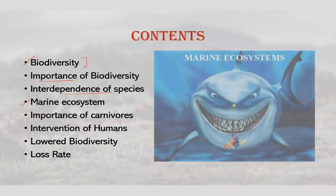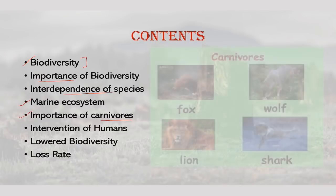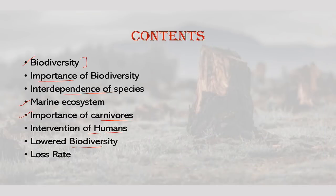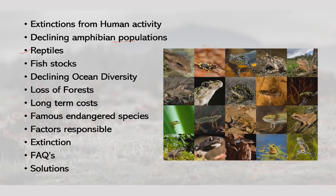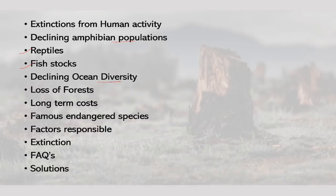We will talk about marine ecosystem, importance of top carnivores, intervention of humans, lowered biodiversity loss rate, extinction from human activity, declining amphibian populations, reptiles, fish stocks, declining ocean diversity, loss of forest, long-term costs, famous endangered species, factors responsible for extinction, and various frequently asked questions regarding this topic along with probable solutions.